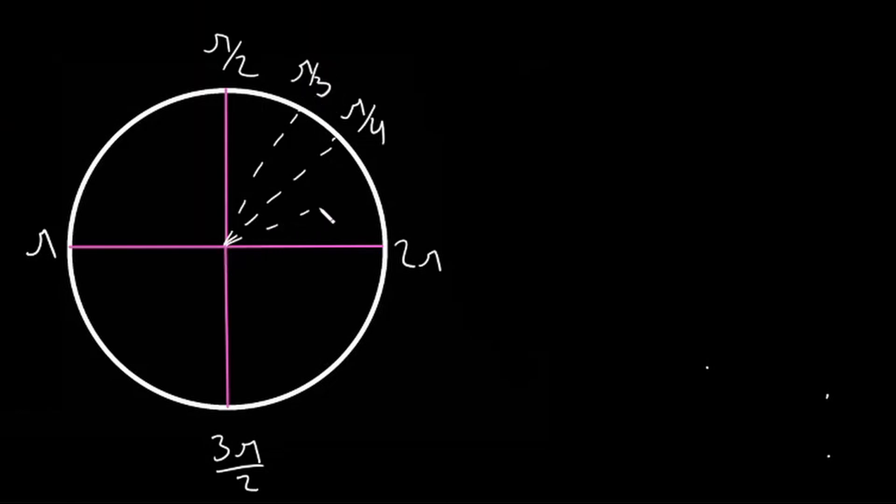But what about 30 degrees? Let's not use the conversion formula, and let's just think about it. If we know that pi over 2 is equal to 90 degrees, 30 is 1 third of 90, so we just need 1 third of pi over 2.